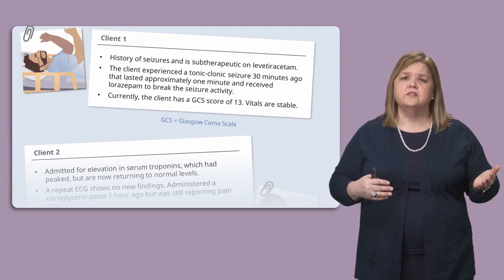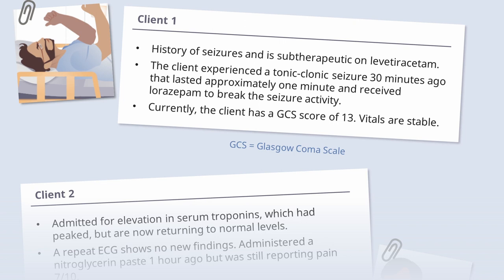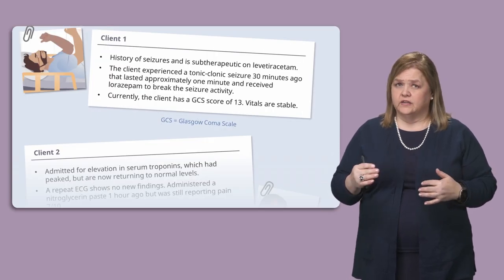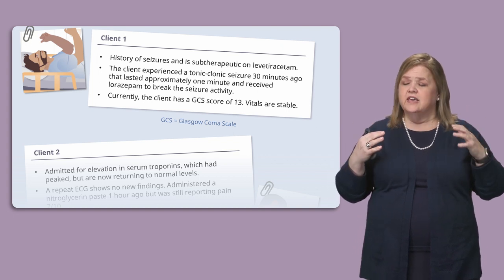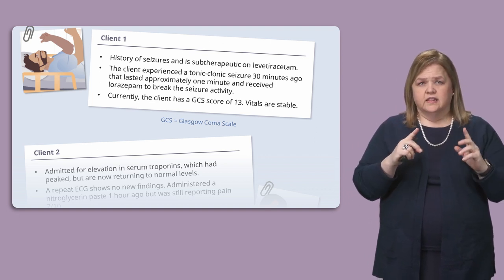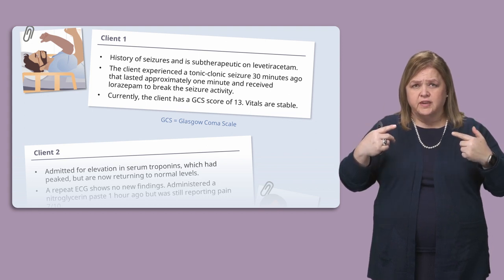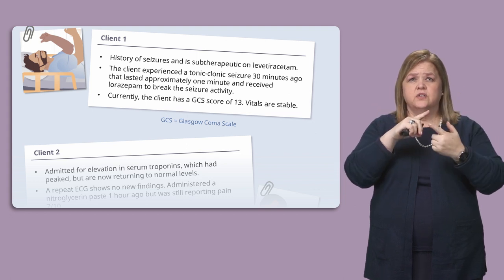Let's start with client one. Client one has a history of seizures and is subtherapeutic on their medication — Levetiracetam. That medication is used to treat their seizures. If they're subtherapeutic, that means it's not doing as much as we would like it to to prevent seizure activity. They have a history of seizures and their medication isn't doing its job.